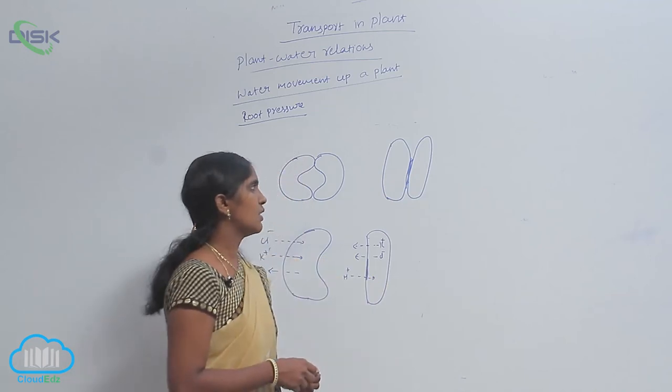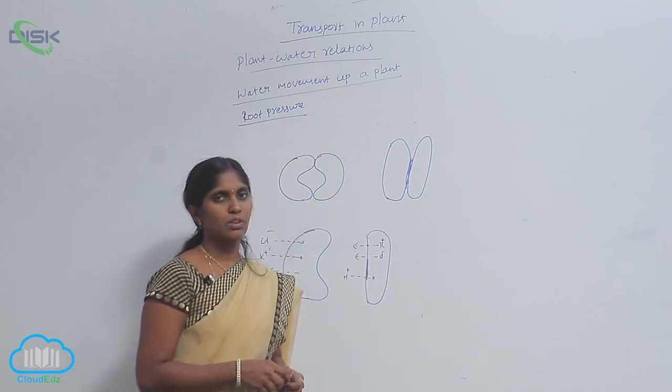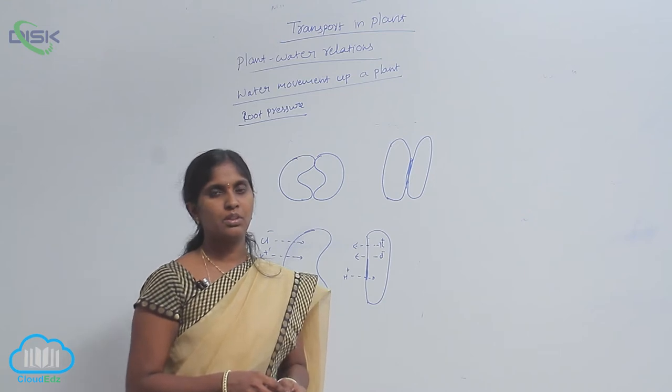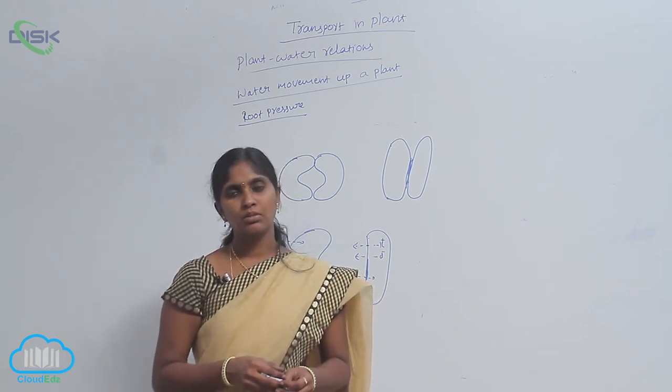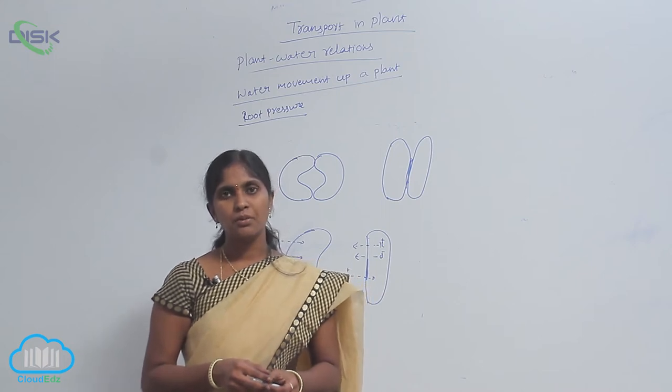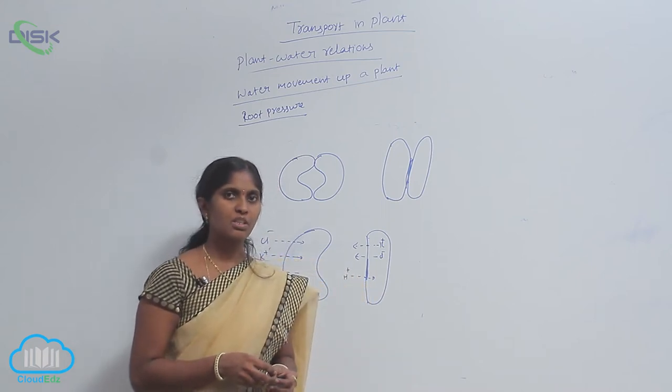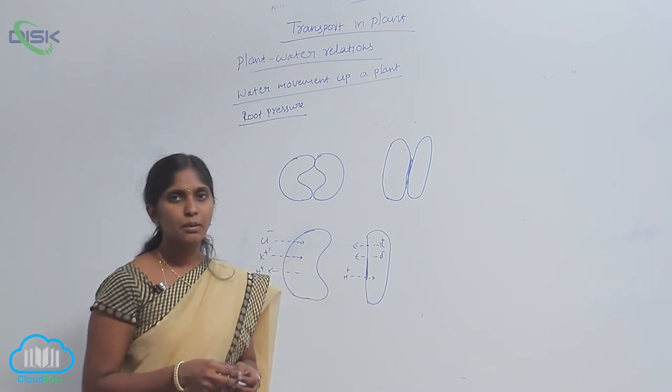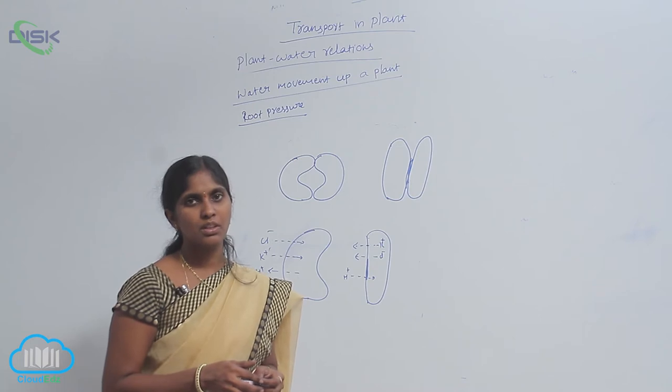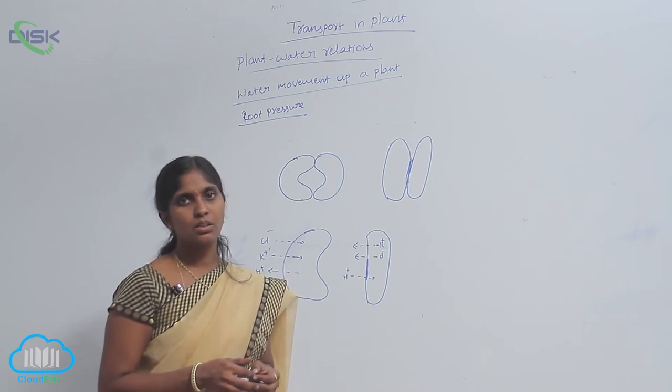Transpiration is loss of water in the form of vapor. The plants absorb the capillary water. Out of 100 percent of the water, only 1 percent of the water is being utilized for metabolic activities of plants, and remaining 99 percent of the water is lost through transpiration.